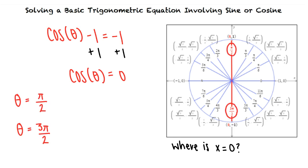Theta equals pi halves and theta equals 3 pi halves. We also need to realize that any angle coterminal with pi halves or 3 pi halves will also satisfy our equation.